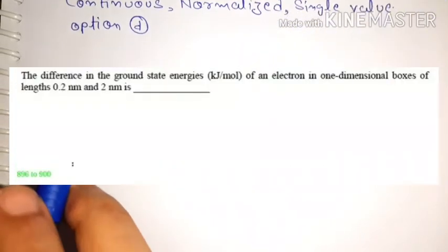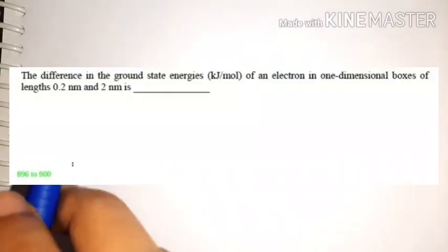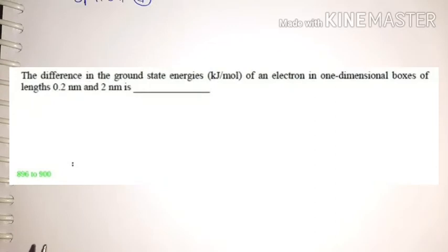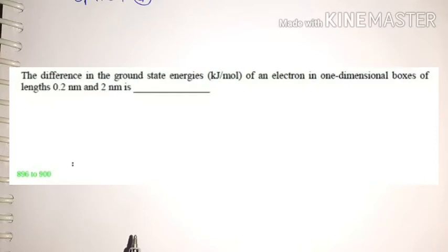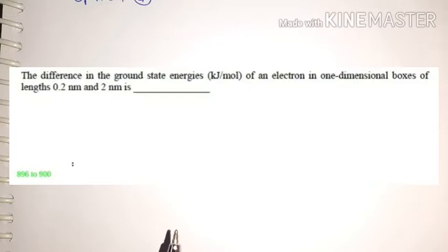The next question says: the difference in the ground state energies in kilojoules per mole of an electron in one-dimensional boxes of length 0.2 nanometer and 2 nanometer is — this is a numerical question from GATE 2015.